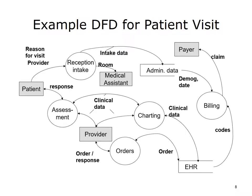The example data flow diagram on this slide shows the data movement and transformations as a patient goes through the entire visit process. This begins with the reception intake process, where the intake data are entered or written to the administrative database that will be used for billing. After intake, the medical office assistant is given the room assignment. In the examination room, the provider assesses the patient, charts clinical data, and generates orders for further processes. The orders and clinical data are stored in the EHR, and the EHR data are then used in the billing process to generate the claim for financial reimbursement from the payer.